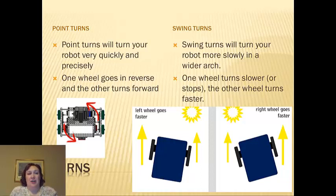So, point turns will turn your robot very quickly and precisely because one wheel is going in one direction and one goes in the other direction. And it does it without you having to change any numbers. You just say point turn right .25 seconds or whatever.